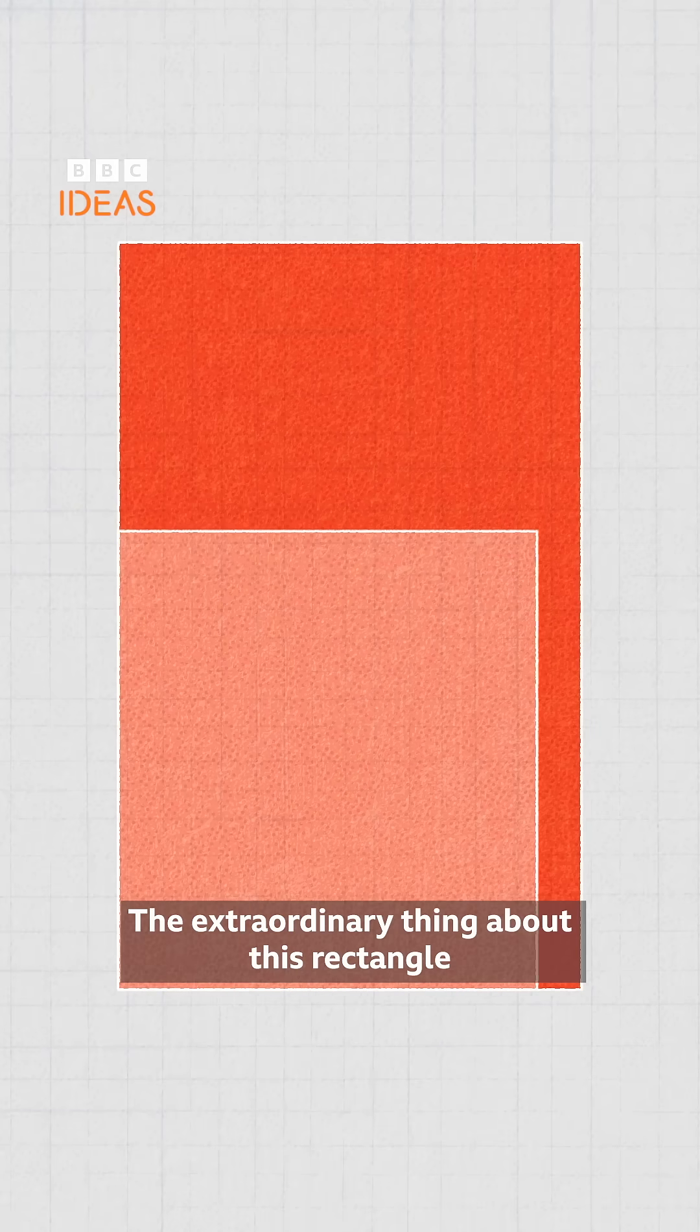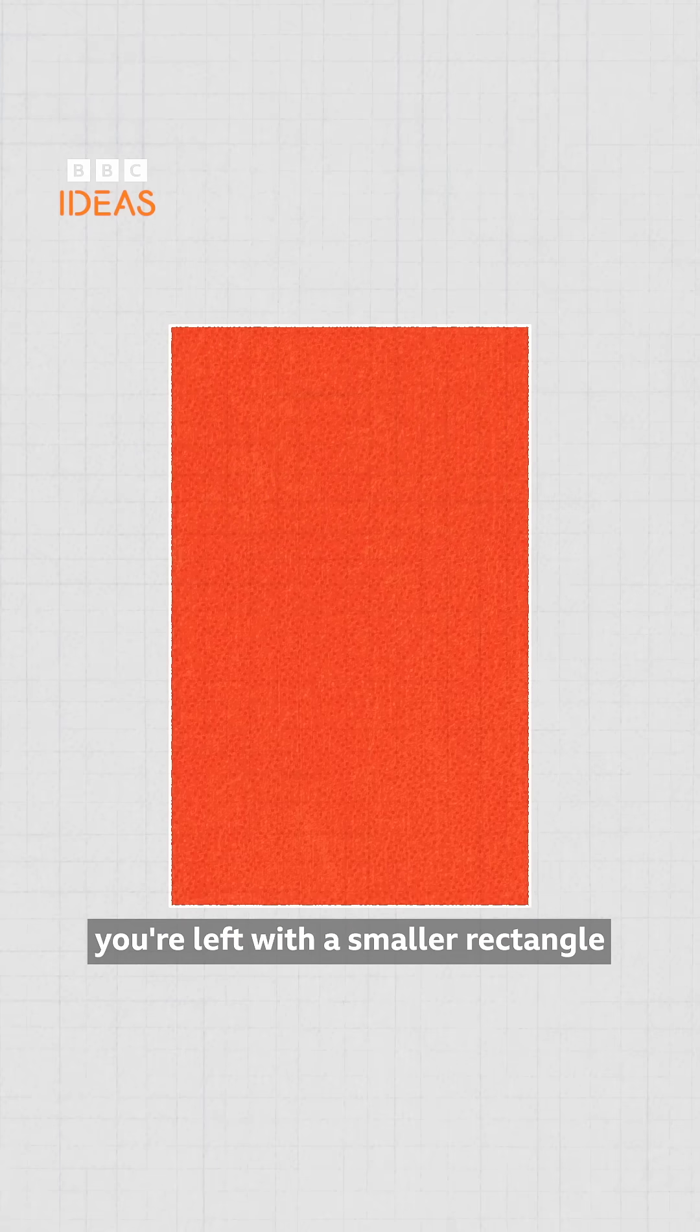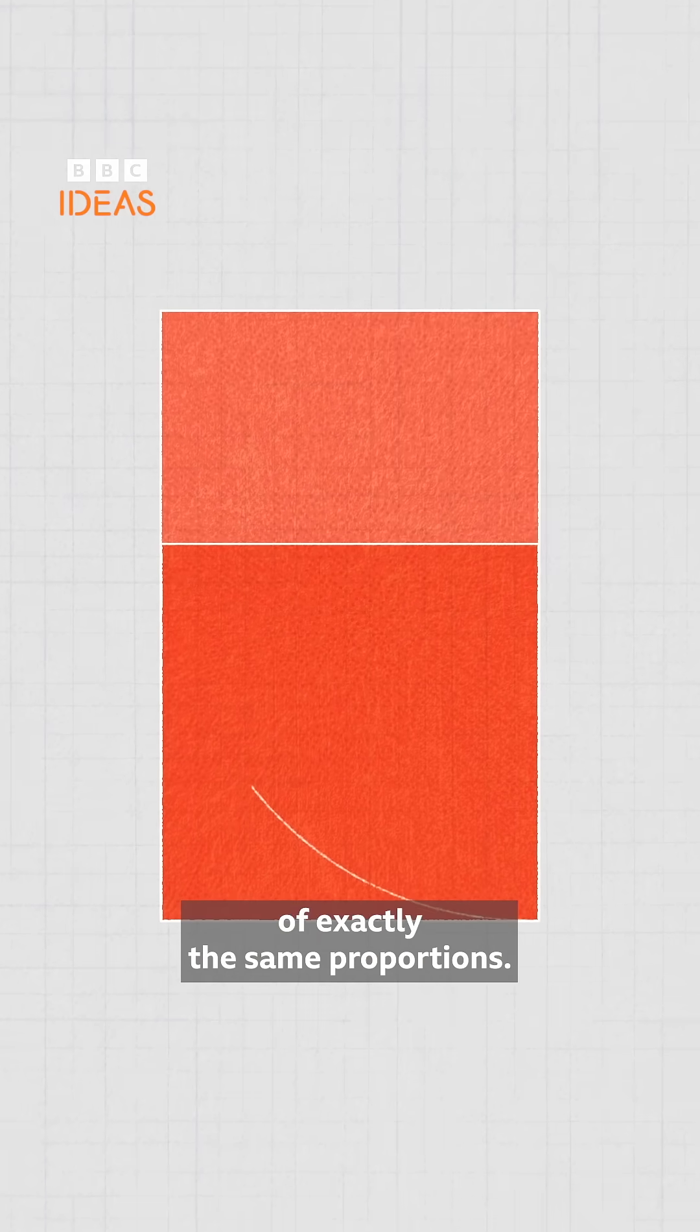The extraordinary thing about this rectangle is that if you cut off a perfect square, you're left with a smaller rectangle of exactly the same proportions.